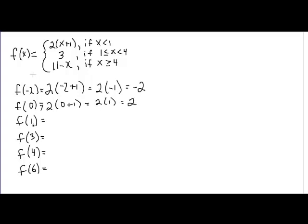f of one: one is not less than one, this is false. But one is greater than or equal to one, so we use this definition. Now this time this is a constant so there's no x to substitute in. So f of one is just three. If we find f of three, again that three is between one and four, so we use this definition. So this is three.